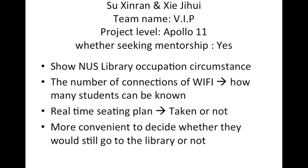For example, by showing the number of Wi-Fi connections, how many students are present can be known. Also, when students come into the library, they can be authorised to select empty seats and take them. Once they finish the selection, the seats on the app will be shown as taken. In this way, before students go into the libraries, they can know the real-time seat availability from anywhere and choose whether to go to the library or not.